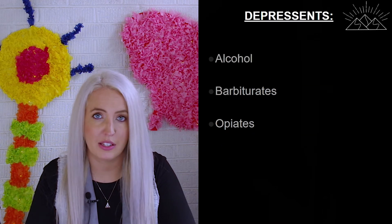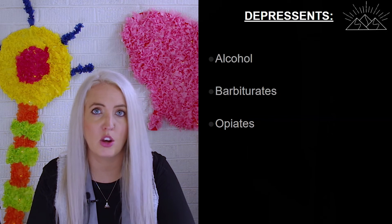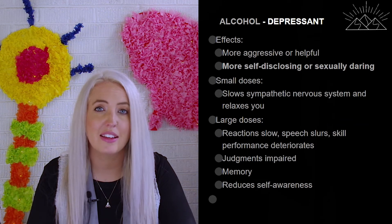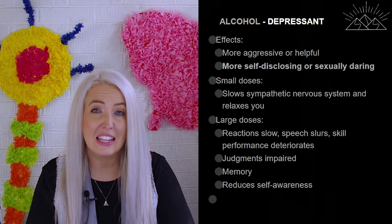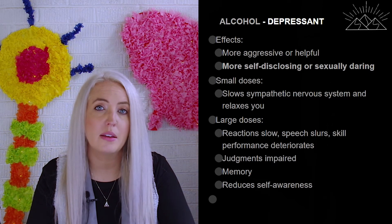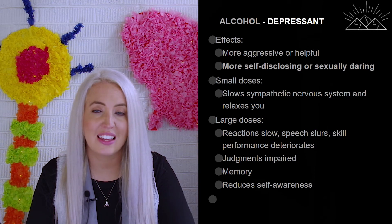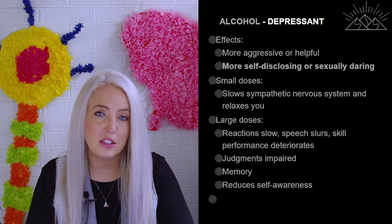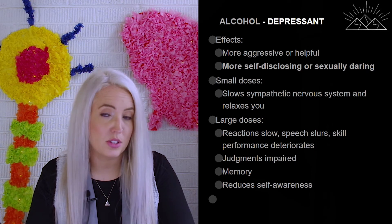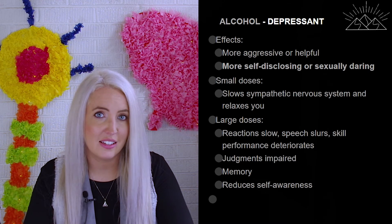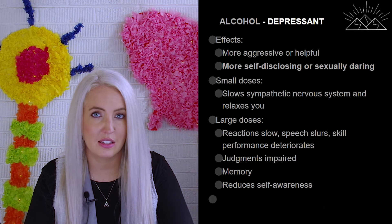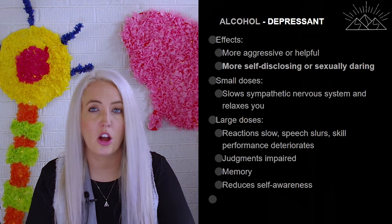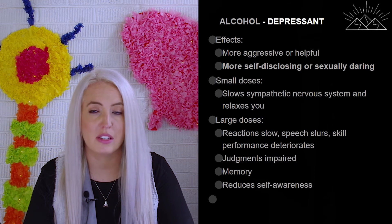The second category is depressants, which include alcohol, barbiturates, and opiates. Alcohol is probably the most common depressant. A common fallacy is that alcohol in different doses has different effects, but it is always a depressant. When someone initially ingests alcohol, one of the first things depressed is their inhibition — we see a slowing of the sympathetic nervous system that helps relax people. They may become more social or outgoing, but it is still depressing their nervous system. As the dose gets larger, we see more depressant effects: reactions slow, speech slurs, and skill performance deteriorates.